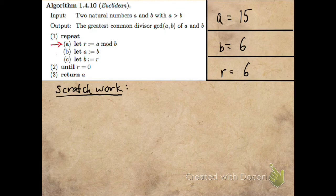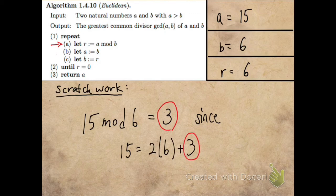I need to compute A mod B. So 15 mod 6, this is 3, since 15 is 2 times 6 plus 3.